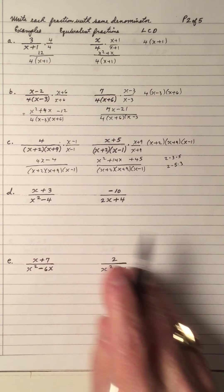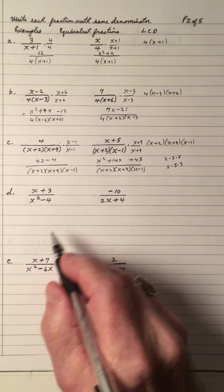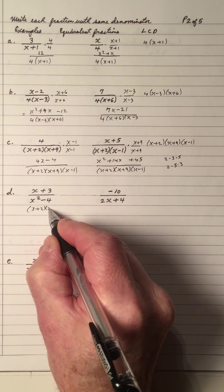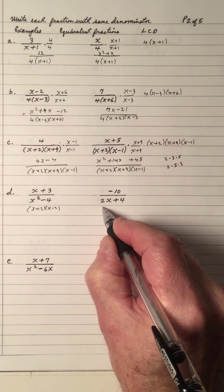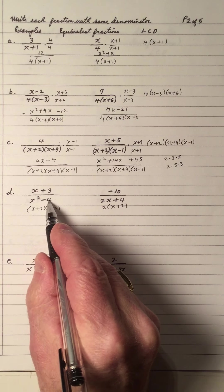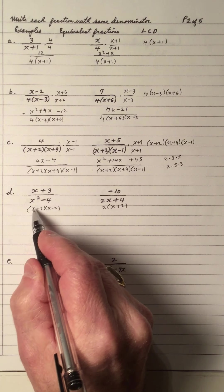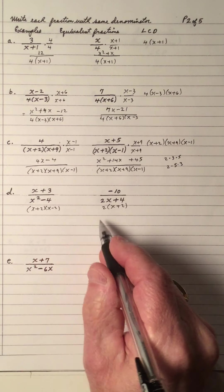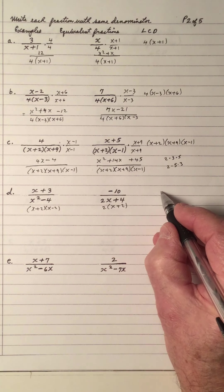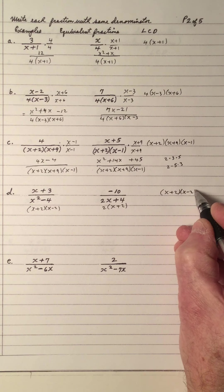Both fractions have the same denominators. And right here, I have an x plus 2. If you factor the denominators, you'll see the LCD much easier. I have this one factored — notice I didn't write this one down, I just rolled it right underneath; it saves you time on a test. So my LCD is x plus 2 times x minus 2.